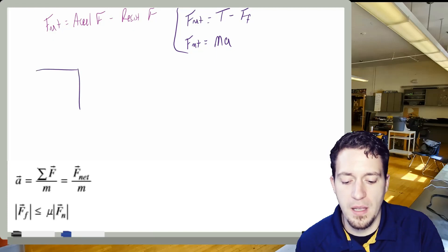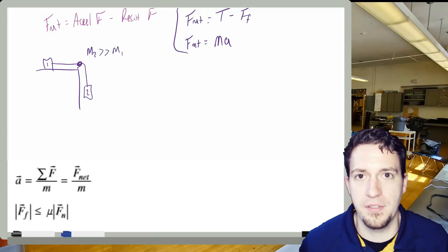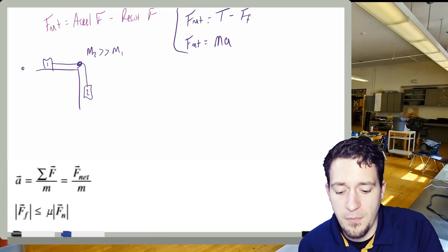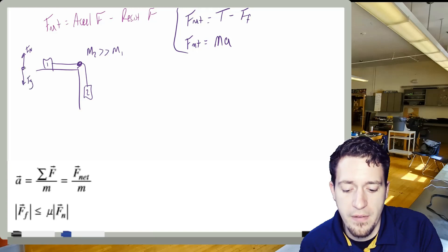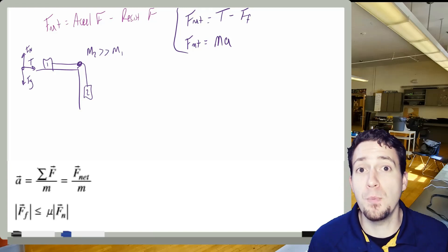Now, one special case that we had done with this was, what if we have something that is a system? So what if I have block one, right? I have some sort of pulley, and then I have block two. And let's imagine the mass of block two is significantly larger than the mass of block one. In a case like this, if I was going to set up my FBDs, right? FBD for block one, I would have an upward normal force. I would have a downward force of gravity, and I would have a force this way, which would be tension. And let's say that this